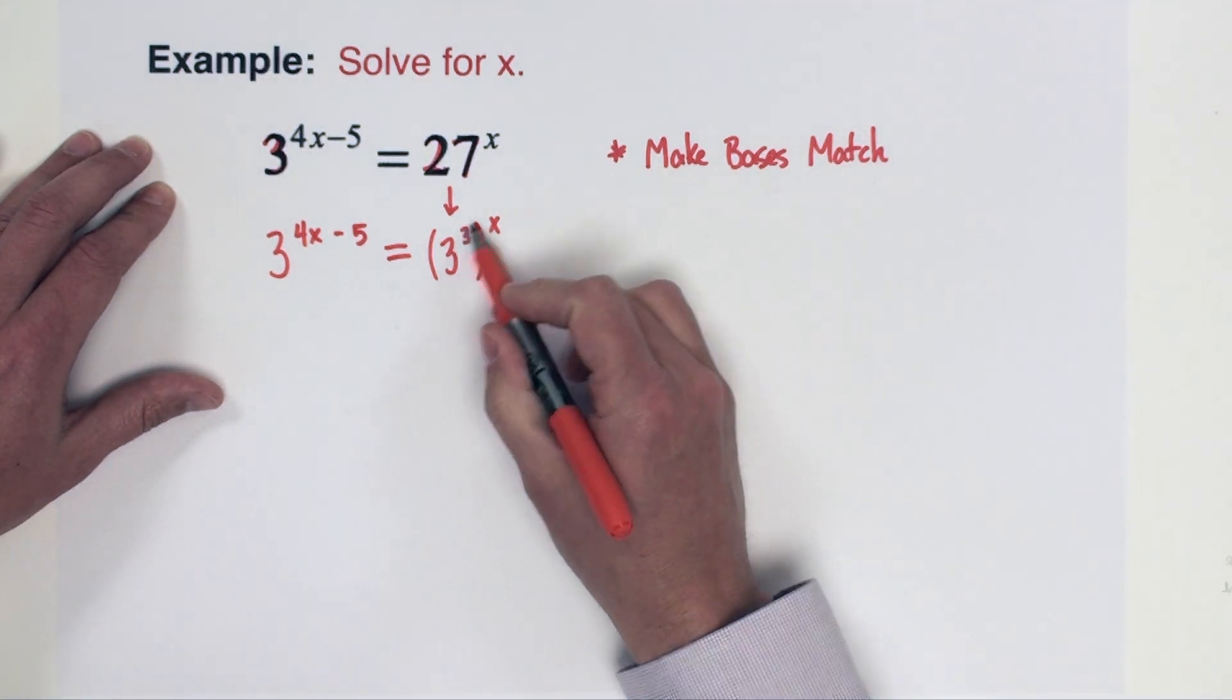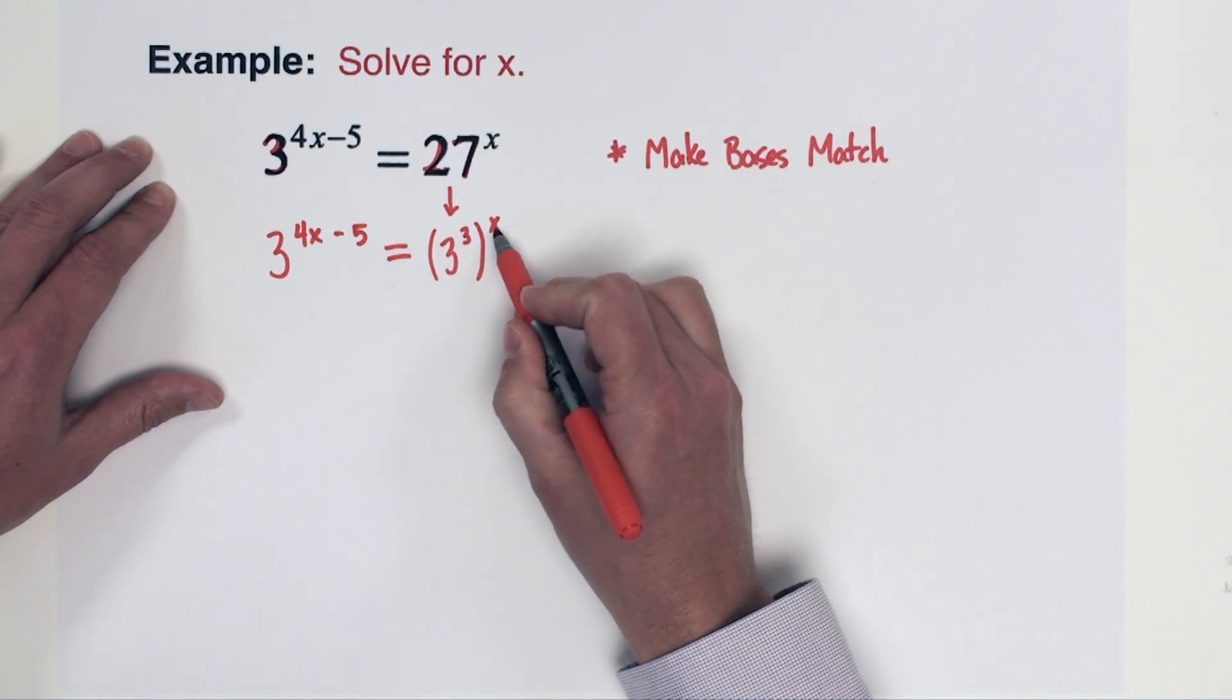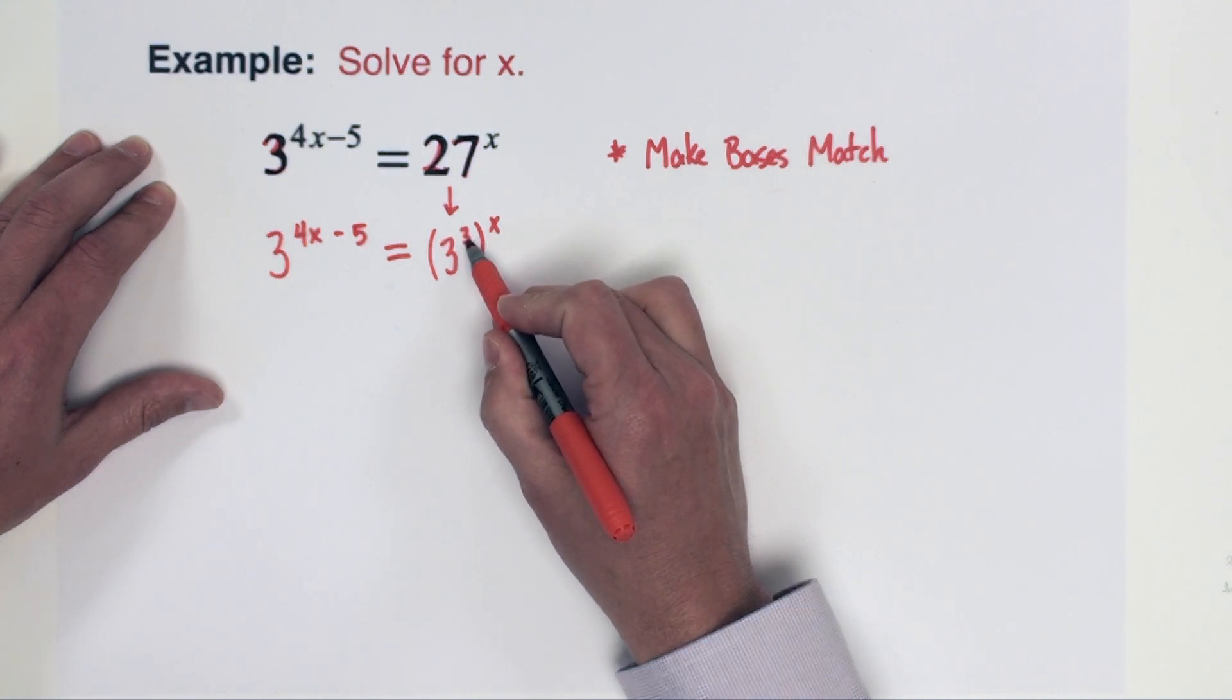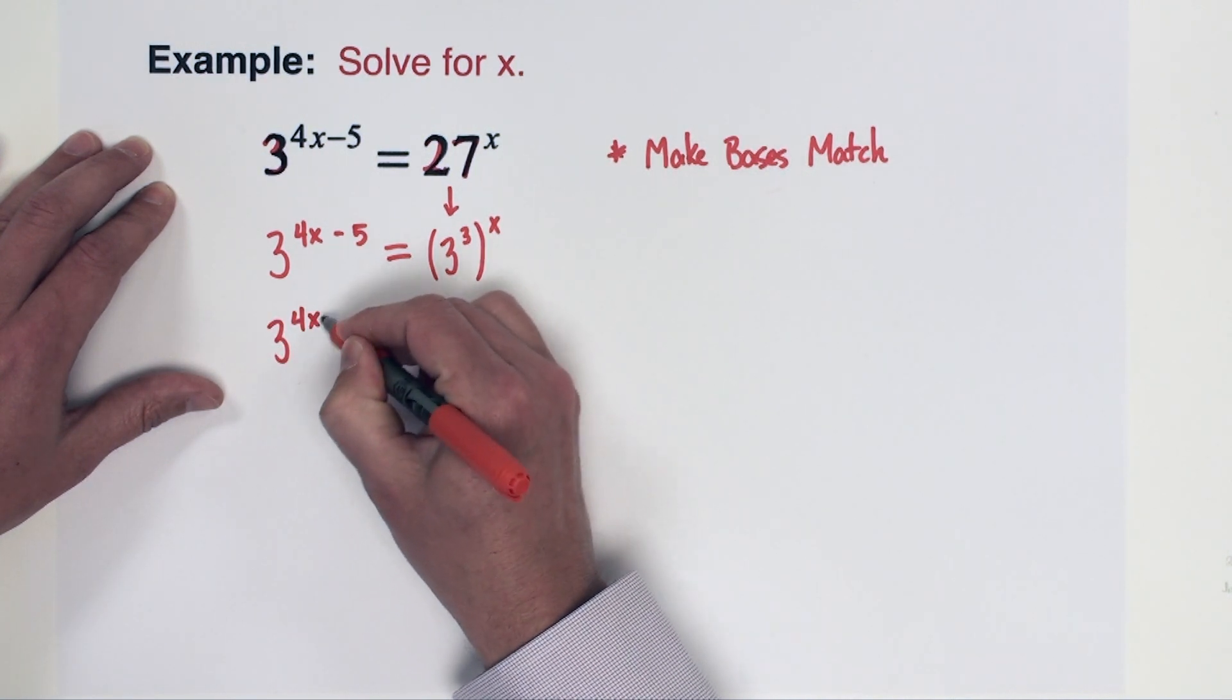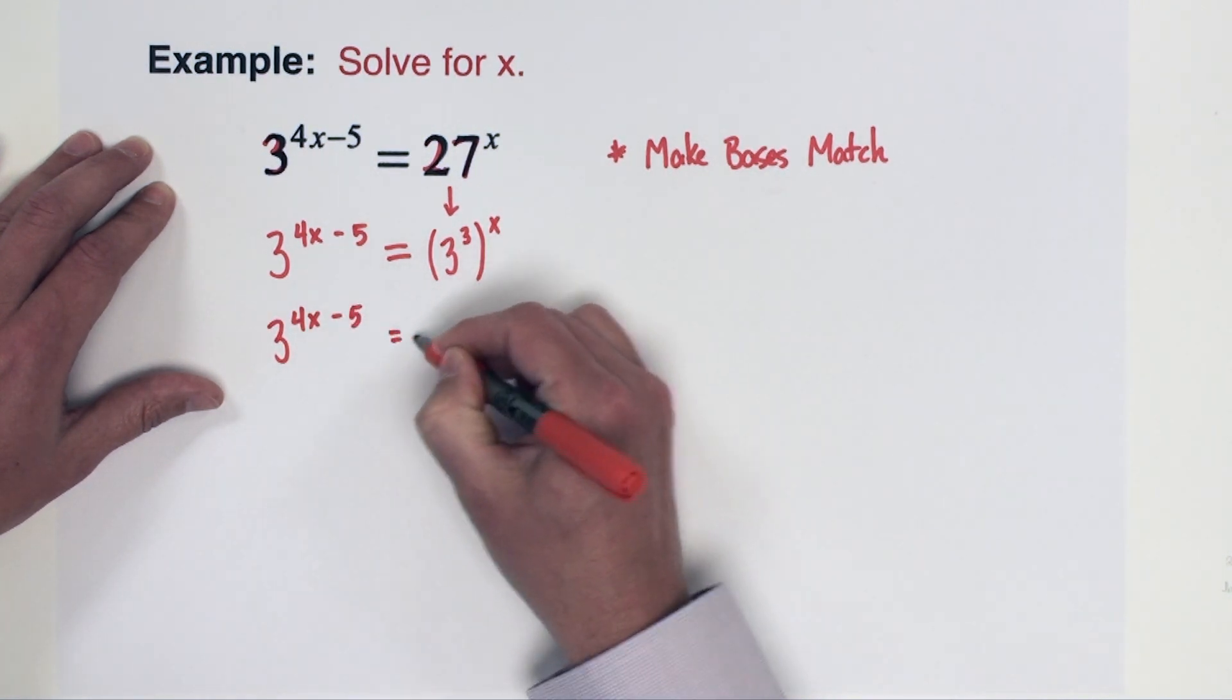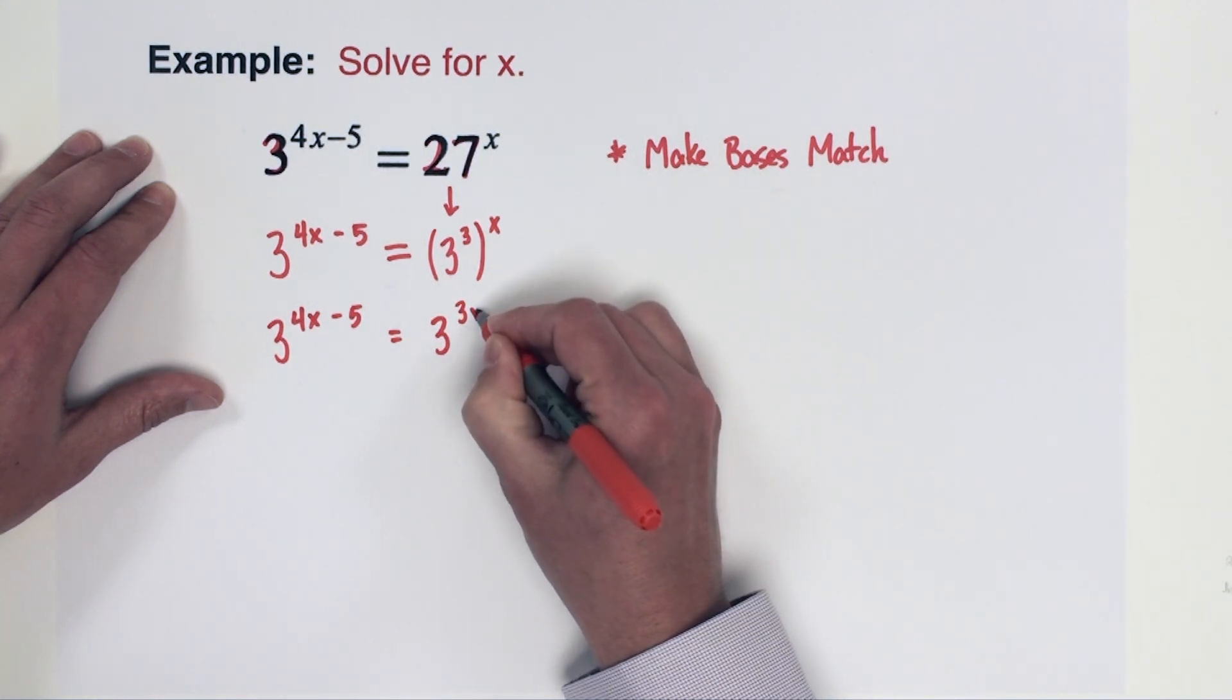Now on the right side here, where I've got this third power raised to the x power, I'm going to go ahead and combine those. We have a power raised to another power. The rule says that you can combine those two powers by multiplying them together. So this is going to create 3 raised to the 3x.